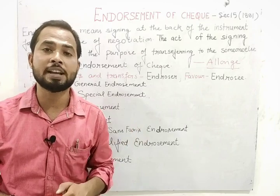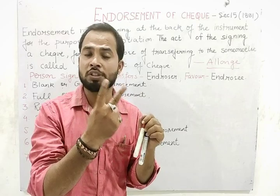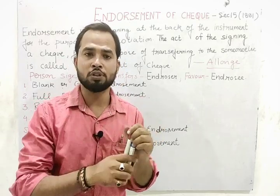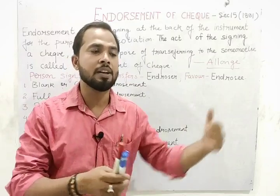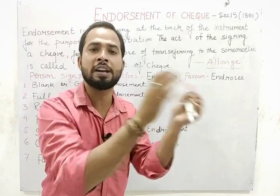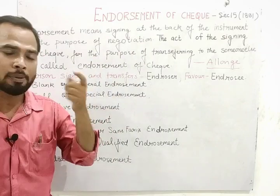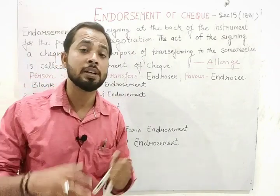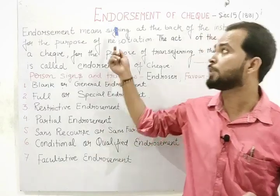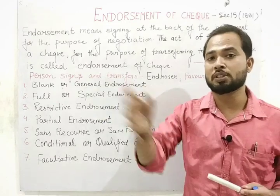So, endorsement of check — what is its meaning? We know we have different types of checks: mainly two types — open check and cross check. In case of open check, we have bearer check and order check. In case of bearer check, there is no need of endorsement. But for all other checks, we need endorsement — meaning if you want to transfer a check from one person to another, you need an endorsement.